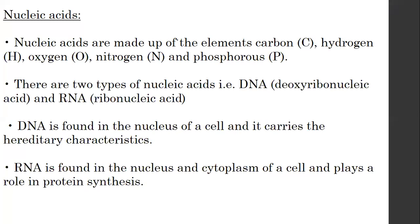Let's continue with another type of organic compound called nucleic acids. We have two types of nucleic acid: DNA, which is called deoxyribonucleic acid, and RNA, which is called ribonucleic acid. These are organic compounds that are found within our cells.